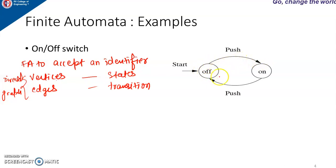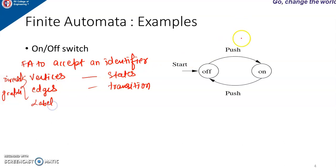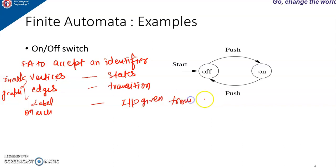We will have vertices — the circles — and the arcs connecting these circles are known as edges. There will be direction involved: off to on is the direction of one edge, and on to off is the direction of the other. The labels of the graph represent the input given from one state to another state. For example, the label on the arc here is push, representing the input given from one state to another.